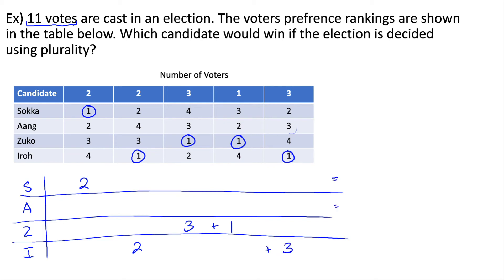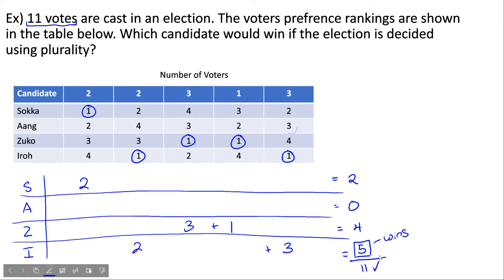Now we tally everything up: Sokka has two votes, Aang has zero votes, Zuko has three plus one which is four votes, and Iro has two plus three which is five votes. So Iro would be the winner. If we add two, four, and five — plus Aang's zero — we get 11, meaning we probably didn't make any mistakes.